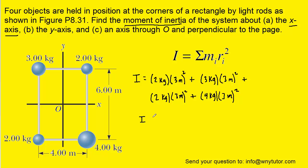And when you add them all up on your calculator, you should get 99 and the unit will simply be kilograms times meters squared. And that is indeed the correct answer to part A.